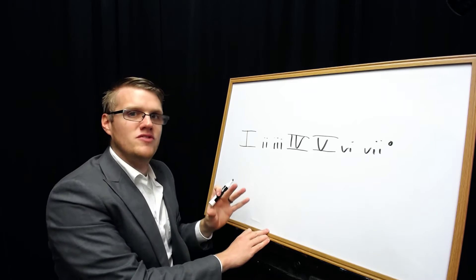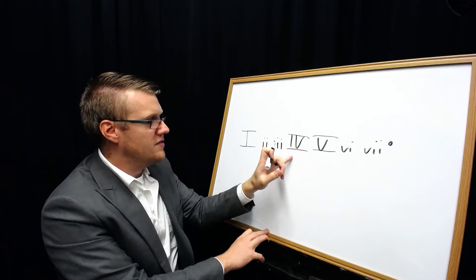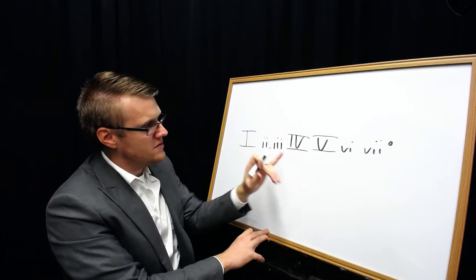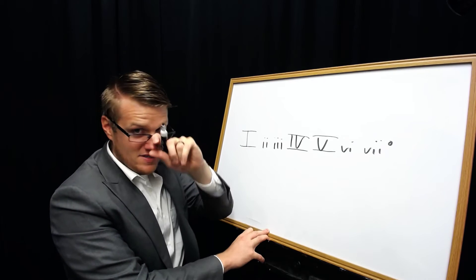You can remember which ones are major and minor: one plus four is five, those are the major ones. The minor ones, two times three is six, and then seven is by itself, it's diminished.